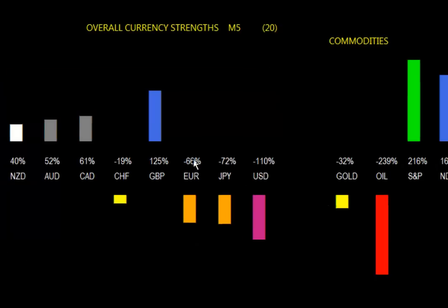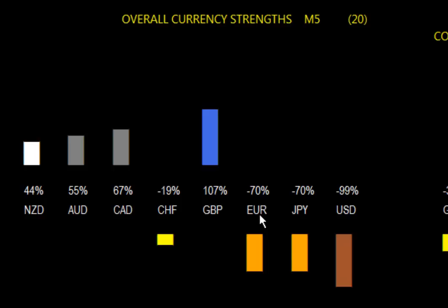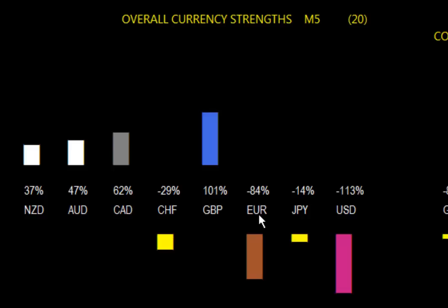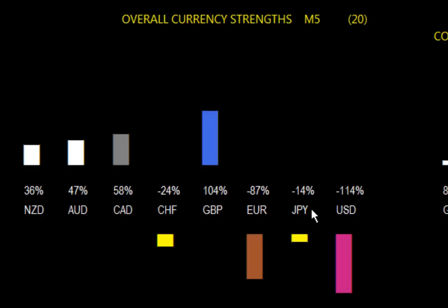If you take the Euro for instance, it's measured against every other currency — the US Dollar, the Japanese Yen, the Pound, the Swiss, the Canadian Dollar, the Aussie Dollar, and the New Zealand Dollar. We then come up with one volatility value, which is represented on this chart over here.